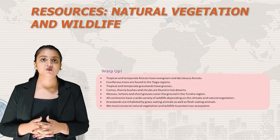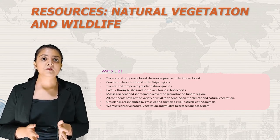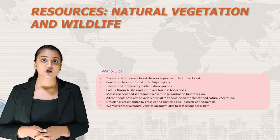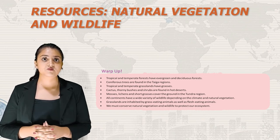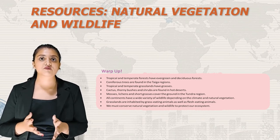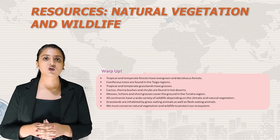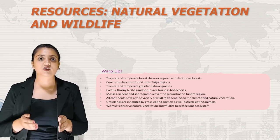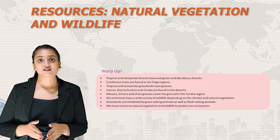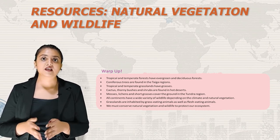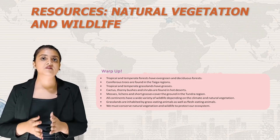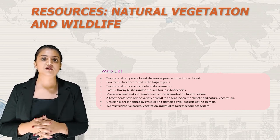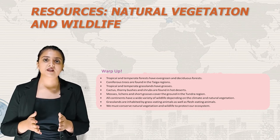Let us wrap up: tropical and temperate forests have evergreen and deciduous forests. Coniferous trees are found in taiga regions. Tropical and temperate grasslands have grasses. Cactus, thorny bushes and shrubs are found in hot deserts. Mosses, lichens and short grasses cover the tundra. All countries have a wide variety of wildlife depending on their climate and natural vegetation. Grasslands are inhabited by both grass-eating and flesh-eating animals. We must conserve natural vegetation and wildlife to protect our ecosystem. That was it for today — we will meet again in the next class.